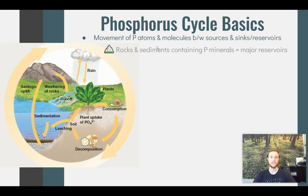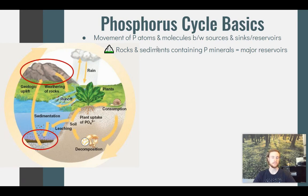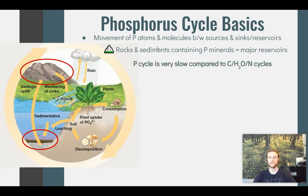The two major reservoirs of phosphorus are rocks and phosphorus-containing sediments. Looking at the diagram, we can see rocks found in mountains or any ecosystem contain phosphorus, as do sediments at the bottom of bodies of water or in soil. An important point is that the phosphorus cycle is extremely slow when compared to the carbon cycle and nitrogen cycle, for a couple of reasons we'll discuss.